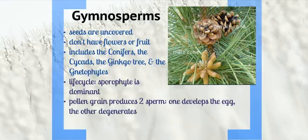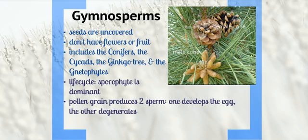Pollen from the male cone floats to another tree by wind, then the pollen grain produces two sperm. One develops the egg, which will form a zygote, and the other degenerates.